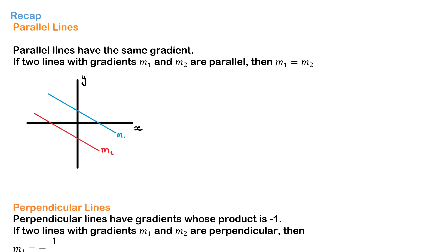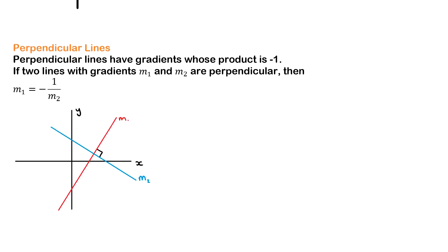To recap the video: parallel lines have the same gradient and are equal distance apart the entire time — m1 equals m2. Perpendicular lines have gradients whose product is negative one, meaning when you multiply them together they equal negative one, and they form right angles where they cross.